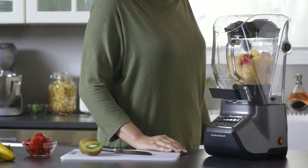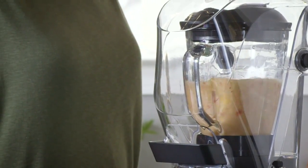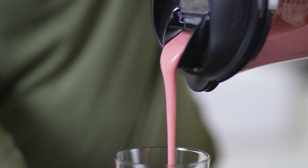The 52-ounce dishwasher safe glass jar has a spill stopping drip free pour spout to minimize the mess.